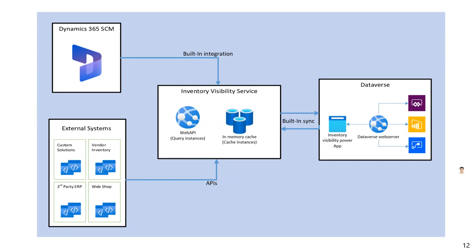Inventory Visibility Service is built to sync with Power Platform and Dataverse. The Power App solution provides two features: one is a user interface for Inventory Visibility where we use the service as a typical Power Apps application — making queries, changes, and most importantly adjusting Inventory Visibility Service configuration and system settings. Another is that Inventory Visibility Service stores useful information into Dataverse tables, making it possible to build customized solutions on top of that, such as using Power Automate to build alert events or Power BI for visualizations.